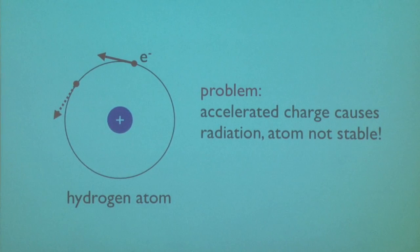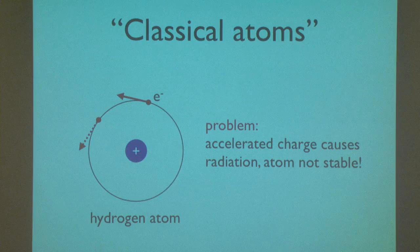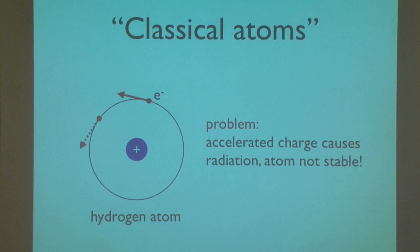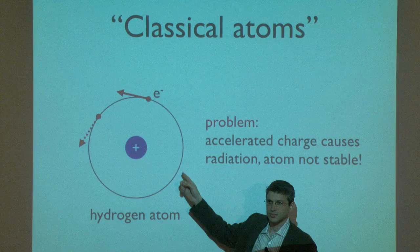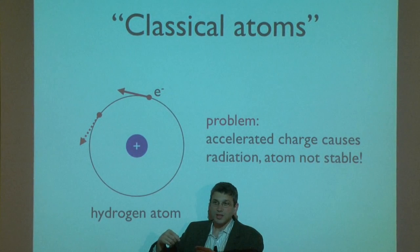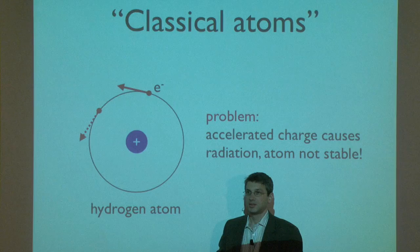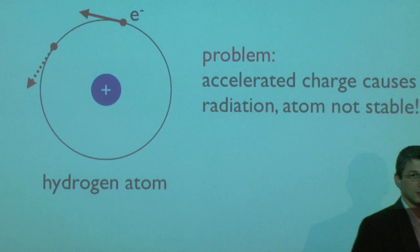What's wrong with the classical atom? How long can we live in a classical world? About 10 to the minus 12 seconds — then it's game over. An orbiting electron is accelerating, and an accelerating charge radiates energy and loses it. So classically, the electron should spiral into the nucleus in about 10 to the minus 12 seconds. We know that's not true.